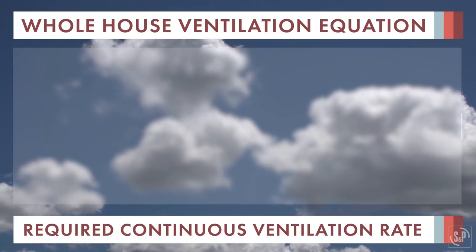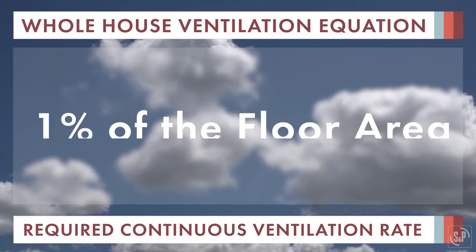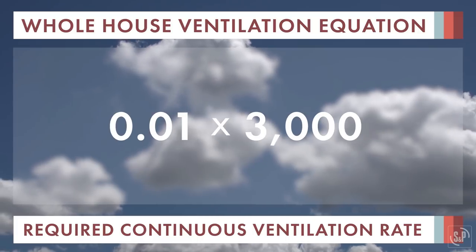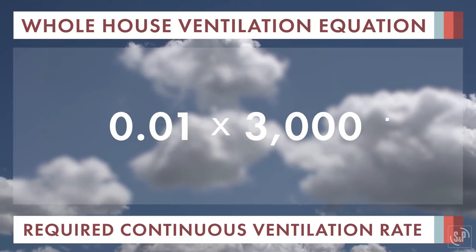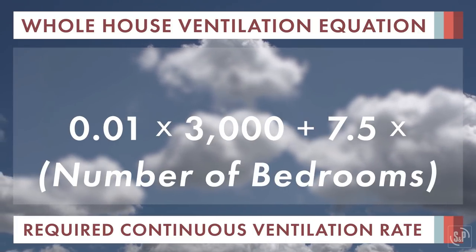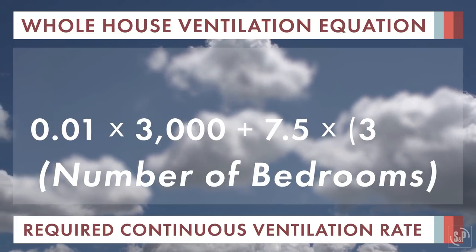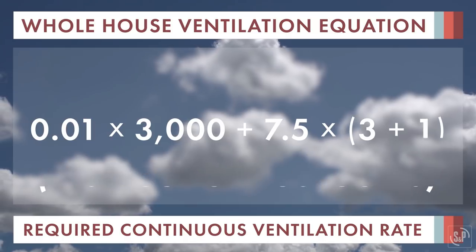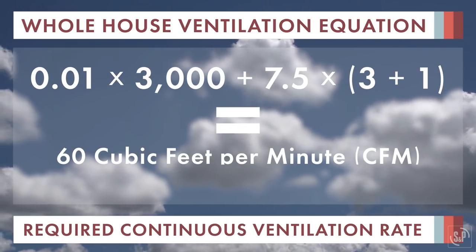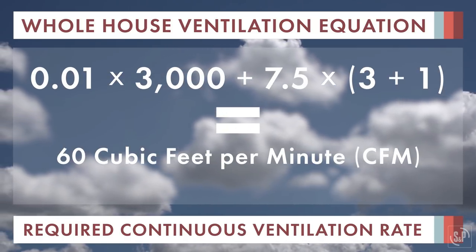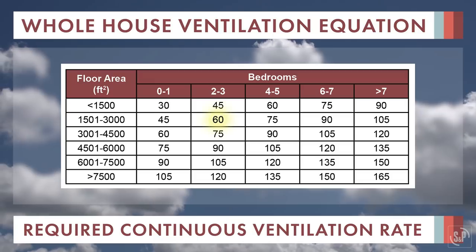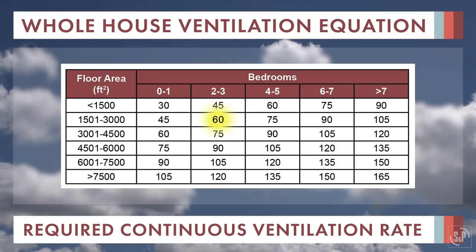Using the equation, you would take one percent of the floor area, which is three thousand, and add it to seven and a half times the number of bedrooms, which is three plus one, which equals 60 cubic feet per minute. You'll notice that you get the same CFM when using the table.